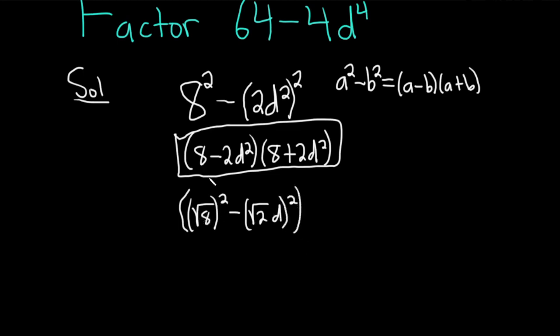The square root of 8 squared is 8. The square root of 2 squared is 2, and then d squared is d squared. And then here we have 8 plus 2d squared.